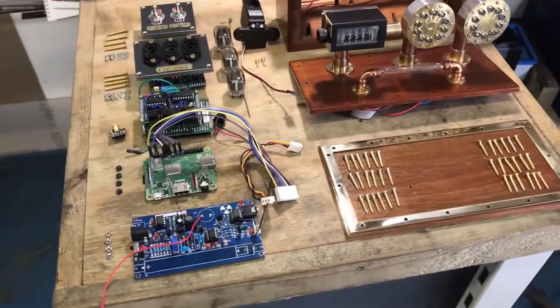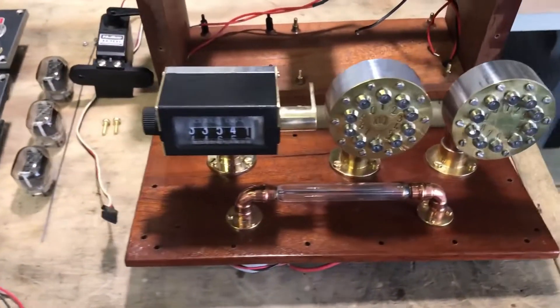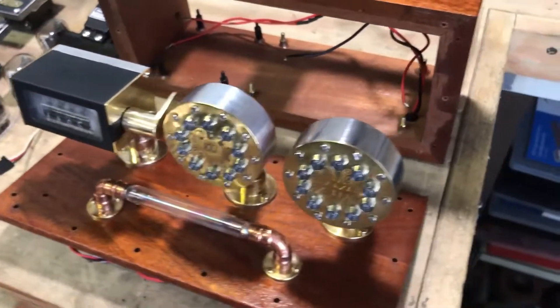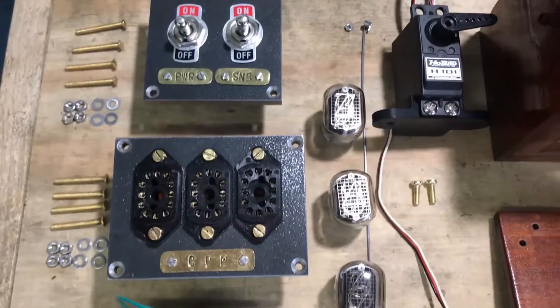I'm feeding the data into InfluxDB and showing it with Grafana, but then of course it needed a fancy case. So I set out on this expedition to build a steampunk style Geiger counter case, including nixie tubes.